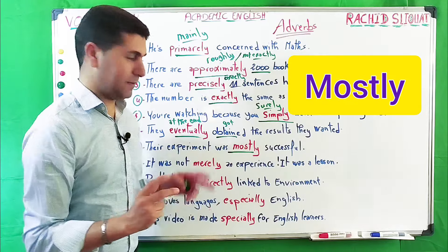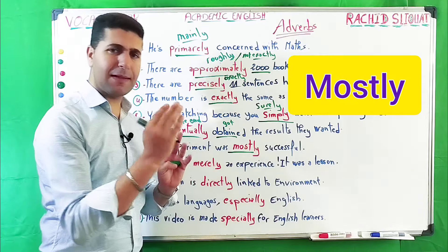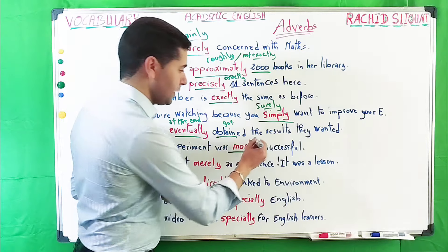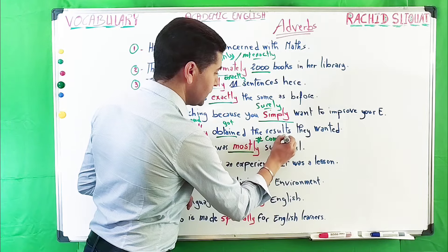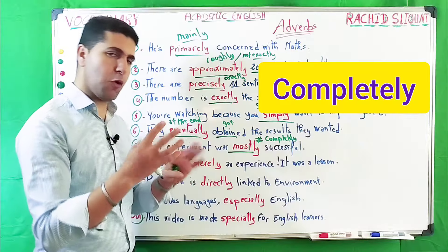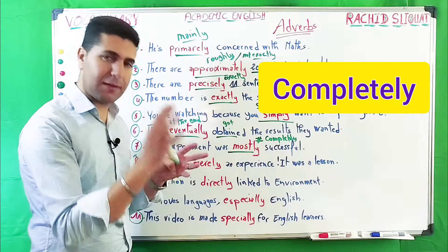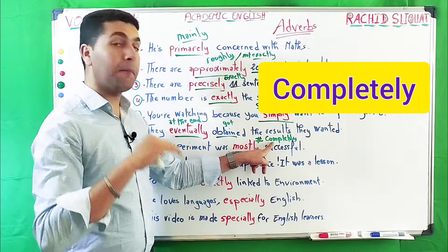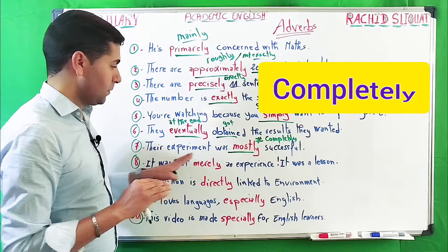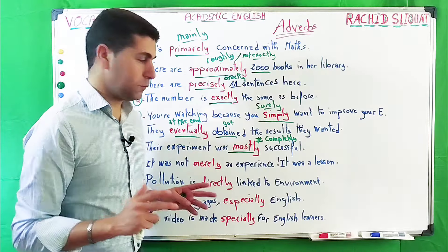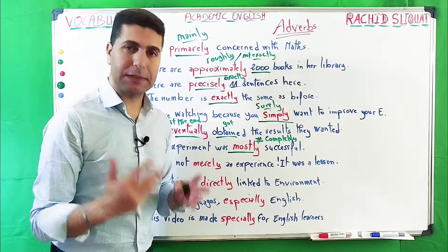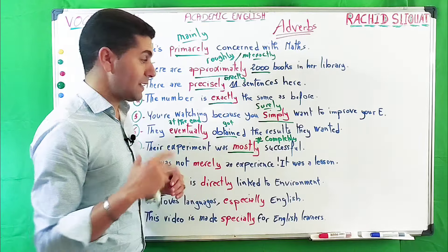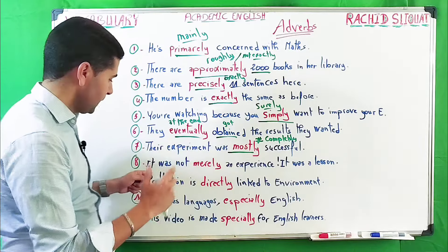'Their experiment was mostly successful.' Here 'mostly' means not completely. So we can say 'mostly' or 'completely' — they are opposites. 'Mostly' is not 100%; 'completely successful' means it is 100% successful. So mostly successful means not entirely, not completely successful.